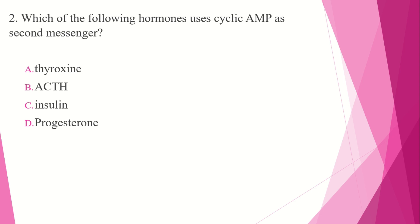The answer is ACTH — adrenocorticotrophic hormone. The classification by mode of action: amino acid and peptide hormones act on the cell membrane and require a second messenger. Second messengers include cyclic AMP, calcium, and tyrosine kinase. ACTH uses cyclic AMP as its second messenger.